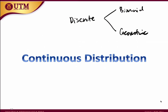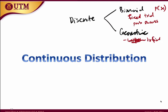Remember the difference between geometric and binomial. Binomial has a fixed number of trials — we know how many times the experiment is conducted — and we count the number of successes. Geometric has infinite trials, and X is defined as the trial number of the first success. Today we continue our discussion on continuous distribution.